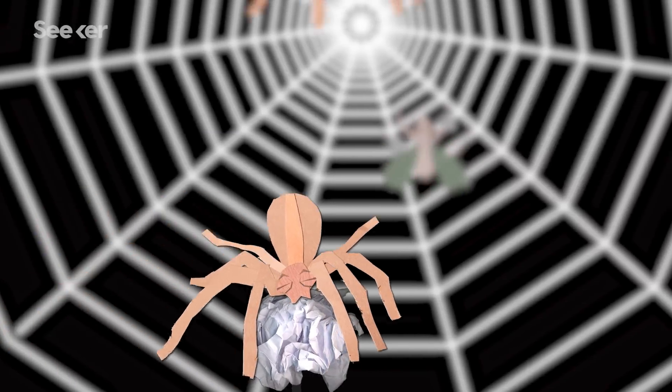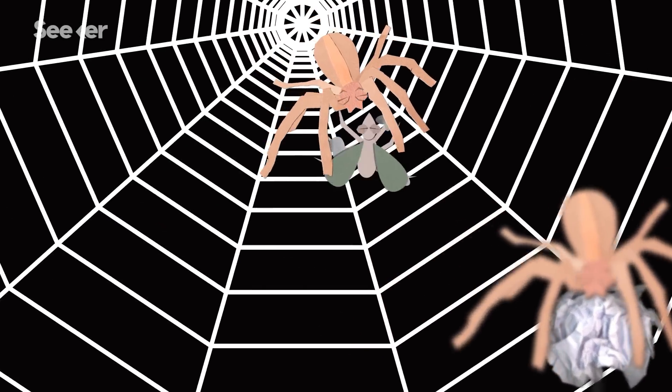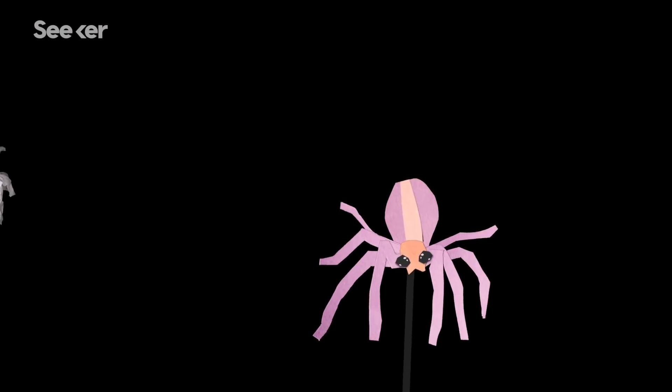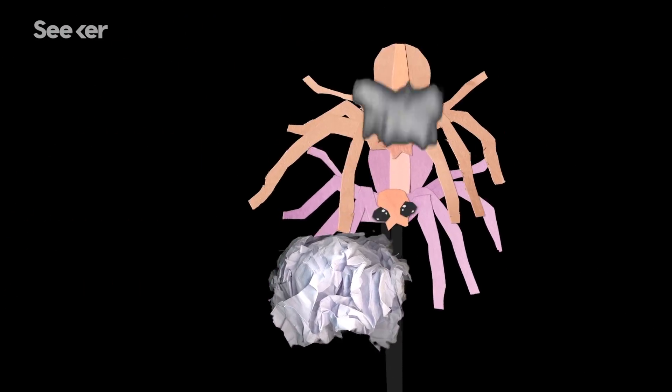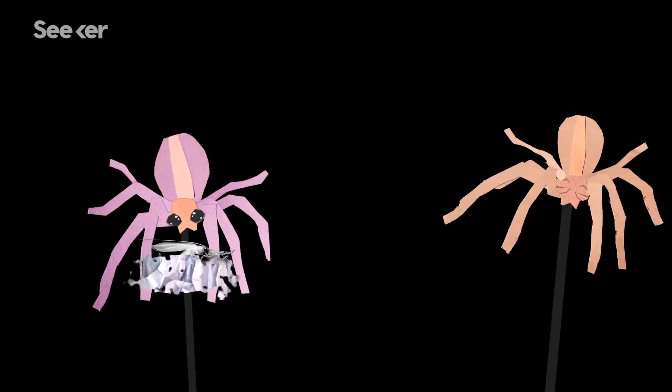Since the cheating spiders are not spending any time or energy in actually hunting and killing a nice gift, they have more time for a higher number of copulation attempts, but with a lower level of sperm transfer.